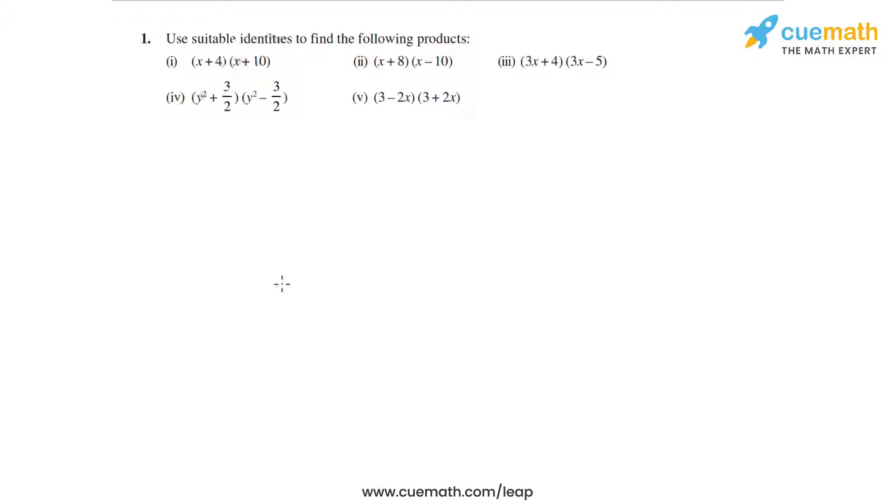In the first question of this exercise, we have to use suitable identities to find each of the given products. So let's start with the first one. The first product is (x + 4)(x + 10).